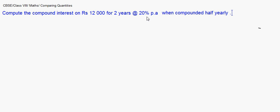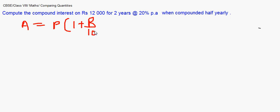You need to find out n — how many times the interest is paid in these two years. Our formula says we have to calculate the amount first to find out the interest. A equals P into (1 + r/100) to the power n. N stands for the number of times the interest is being paid. Semi-annually means every six months, so in two years the interest is paid four times. So our n will be 4.